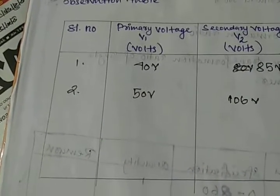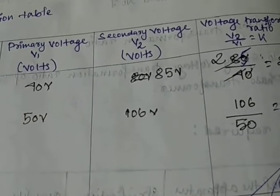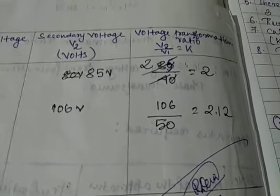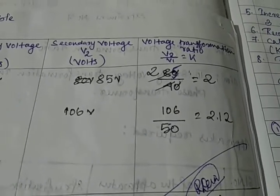For the second set, we have applied 50 volts as the primary and we are getting 106 volts as the secondary voltage. Here also we are getting 2.12 as our voltage transformation ratio, V2 by V1.